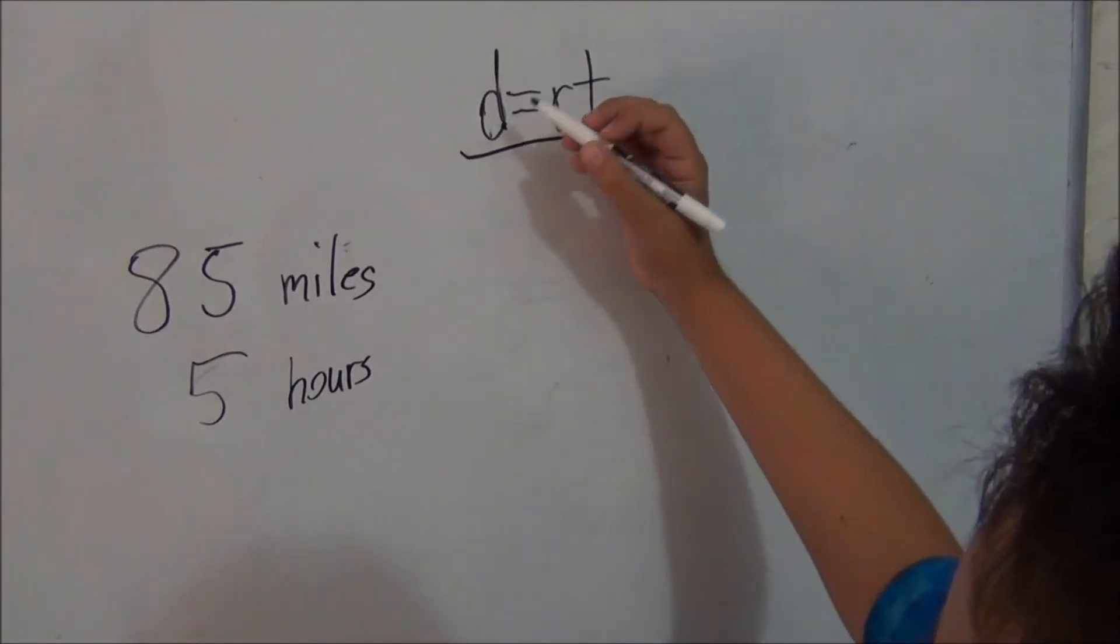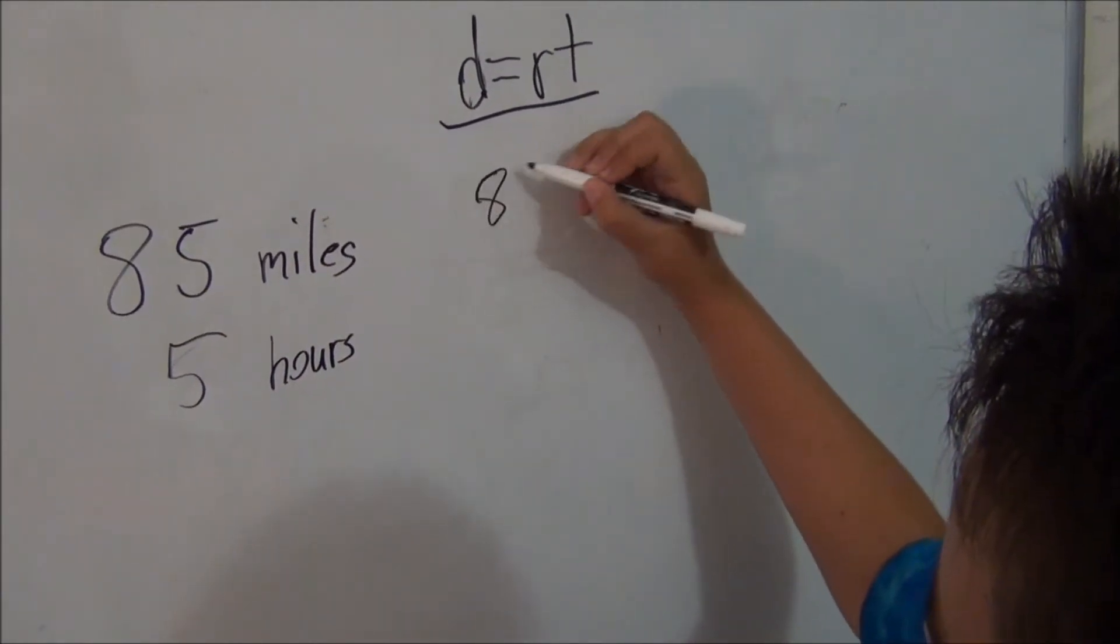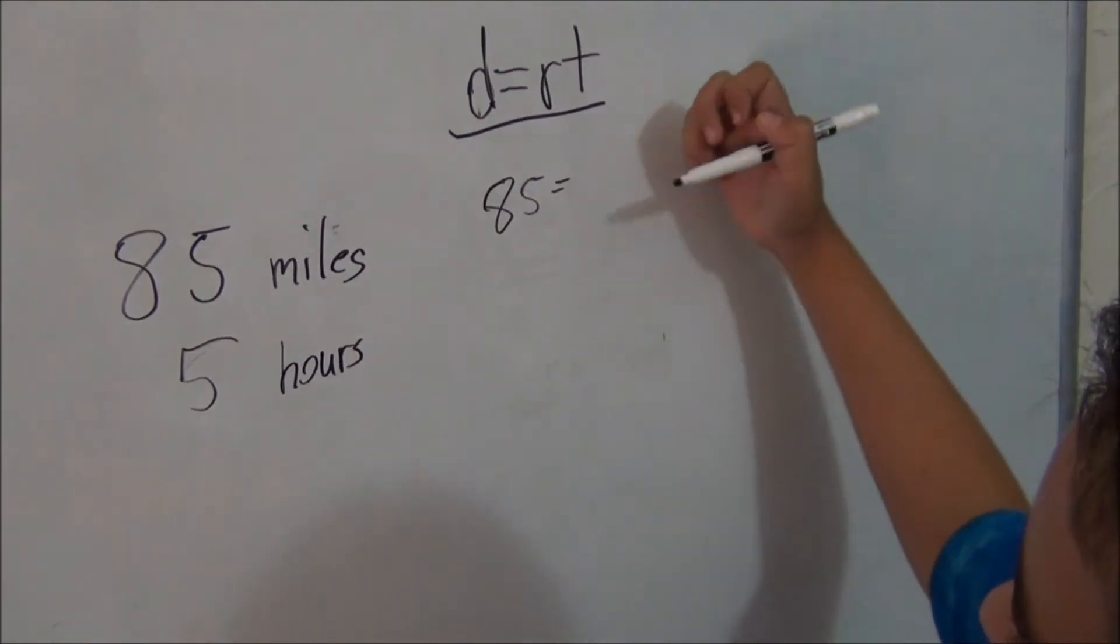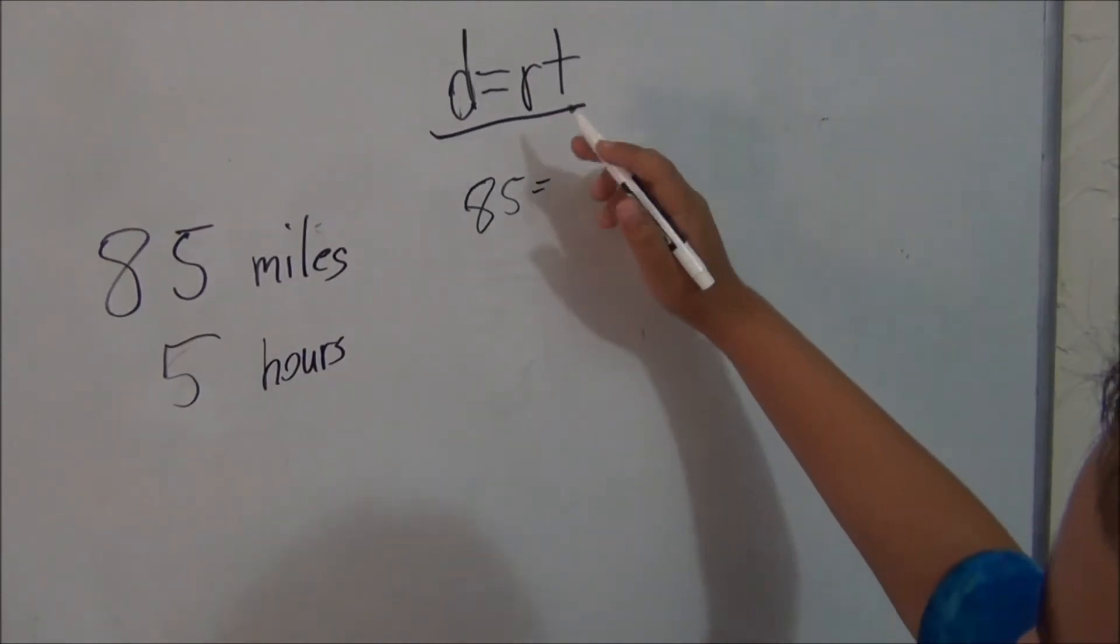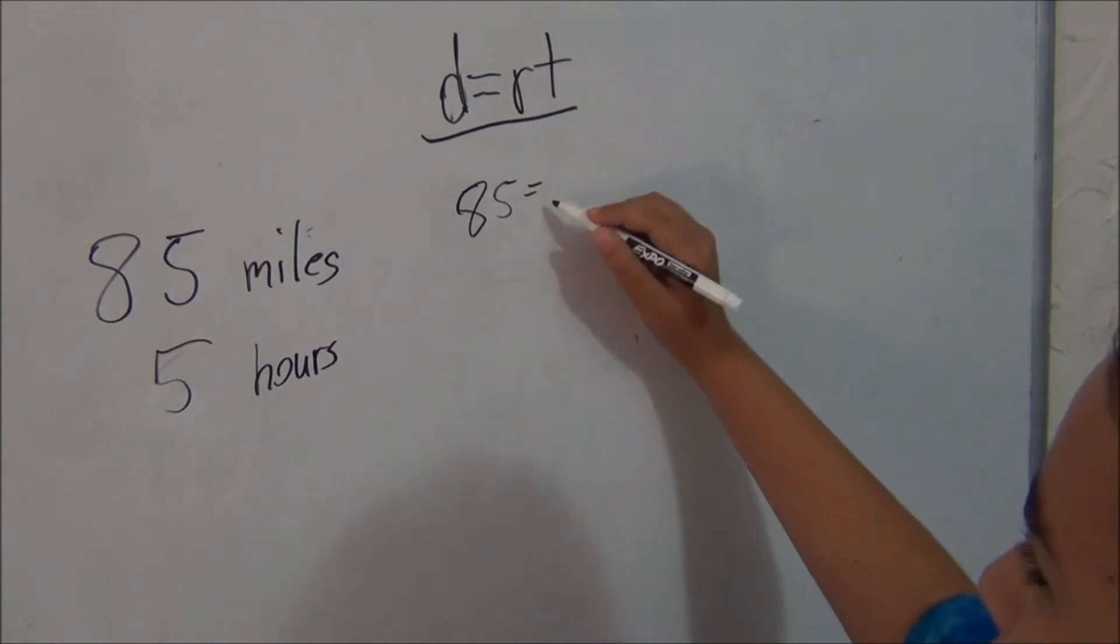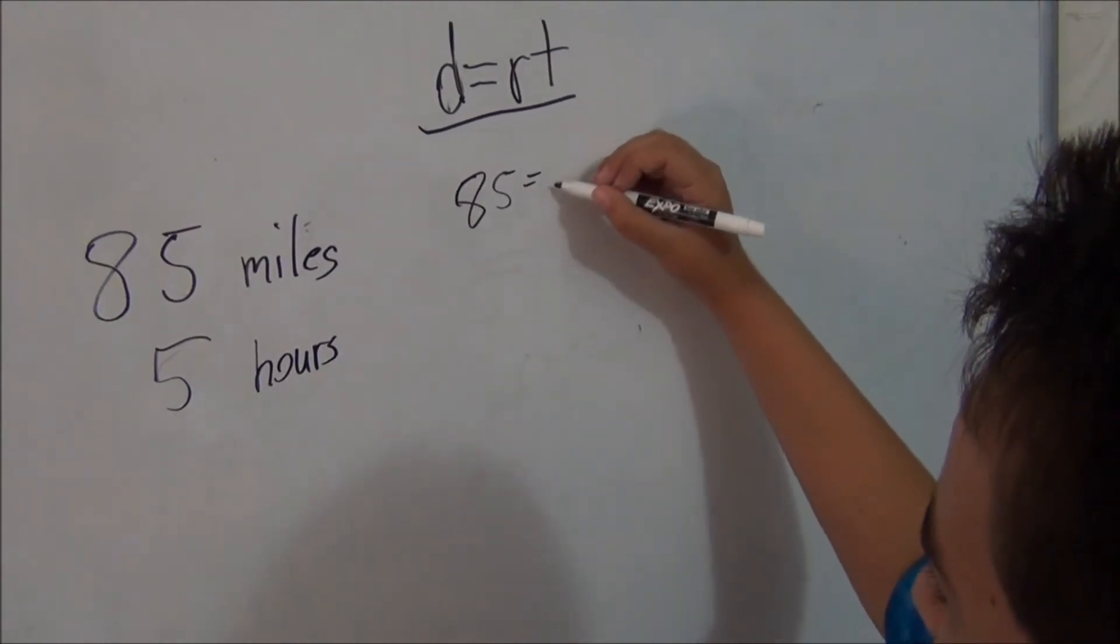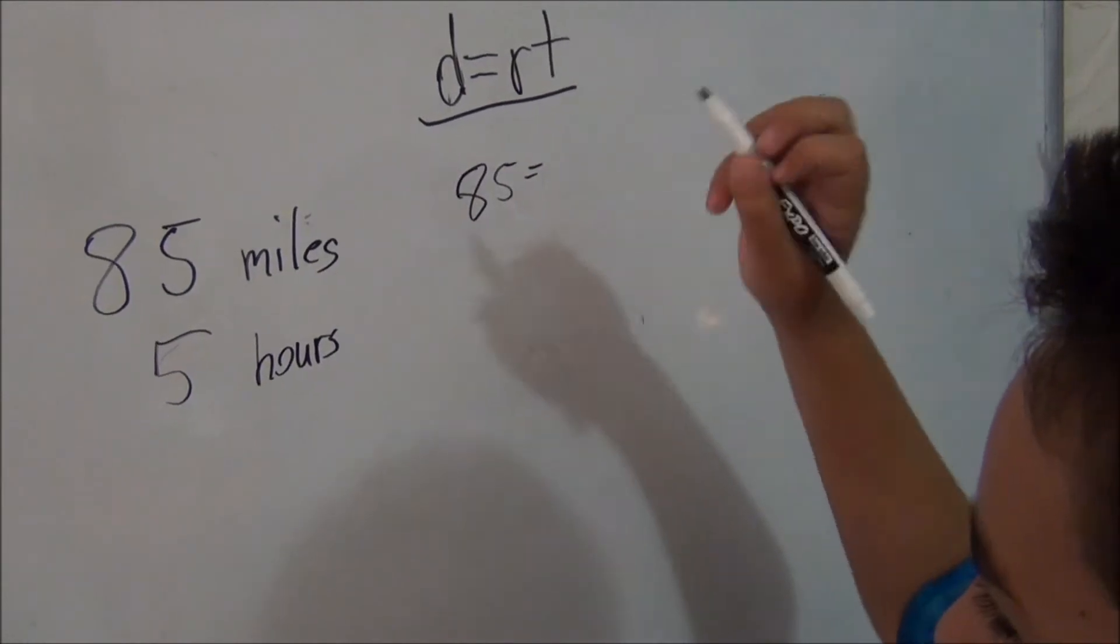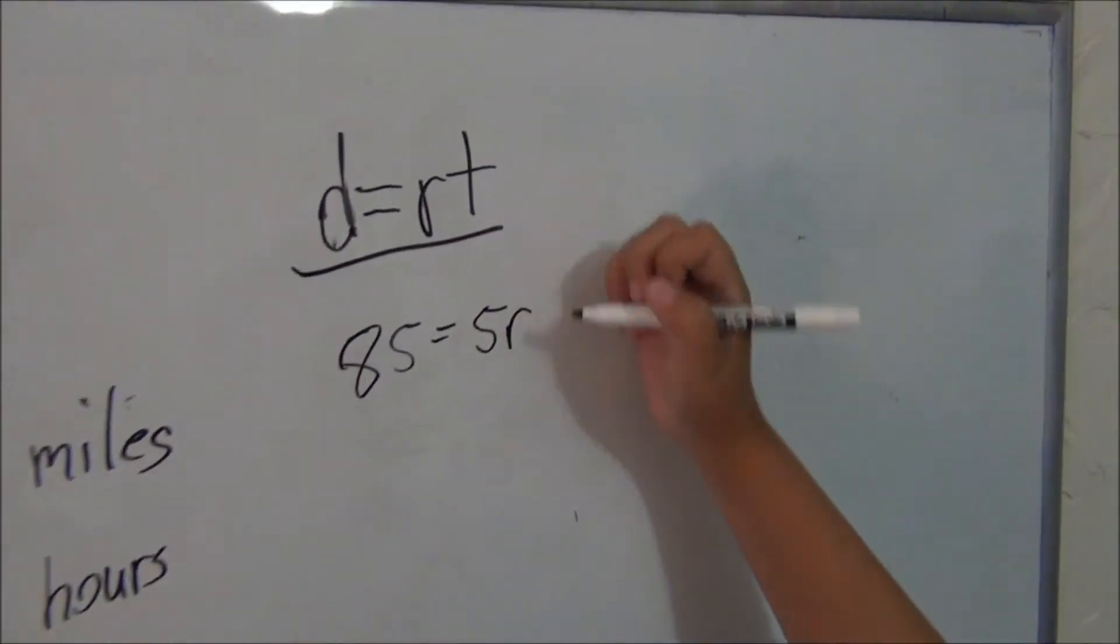Since our distance is 85 miles, we want to put 85 equals... We don't know our rate, so most people might want to put r times t, but it's actually going to be t times r because we know t and the number goes before the variable. So, we have 5r.